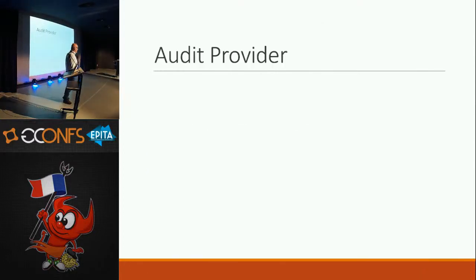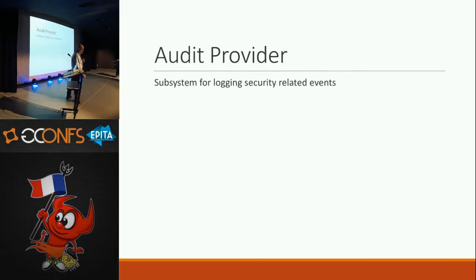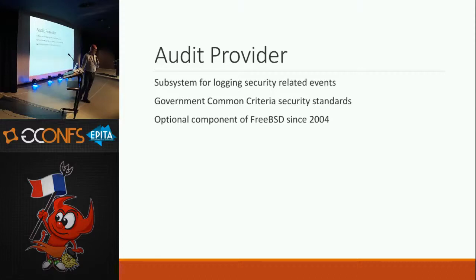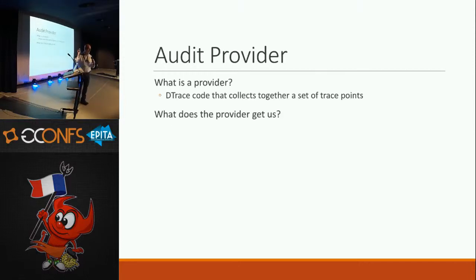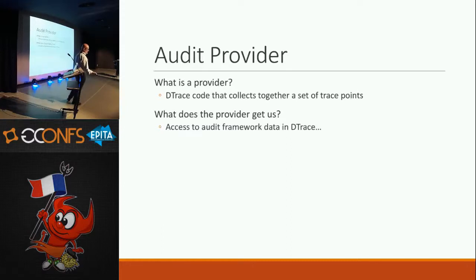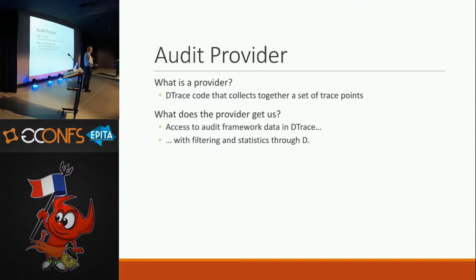In the CADETS project, we are using the audit subsystem in FreeBSD to audit the system as it runs. We've added an audit provider — this is a subsystem for a lot of security-related events. It was originally done for the U.S. government's Common Criteria security standards. It's been optional in FreeBSD since 2004, work done by Robert Watson and others. What does this provider get us? This gives us access to the whole audit framework, meaning we can turn on audit, then use D to filter the data and get statistics, which we would have had to write special programs to get from the audit records.